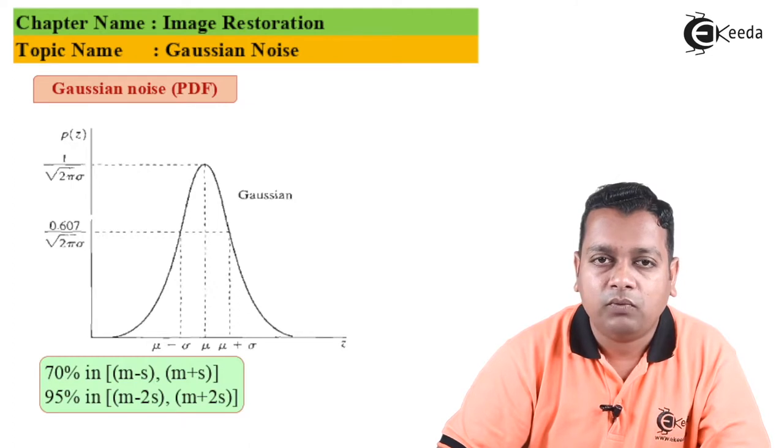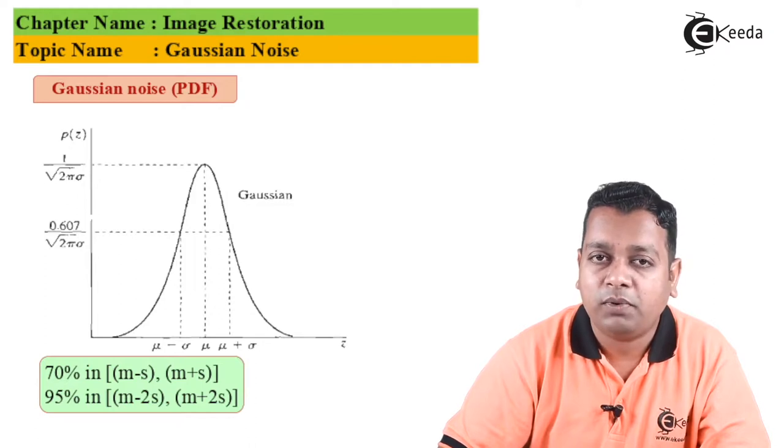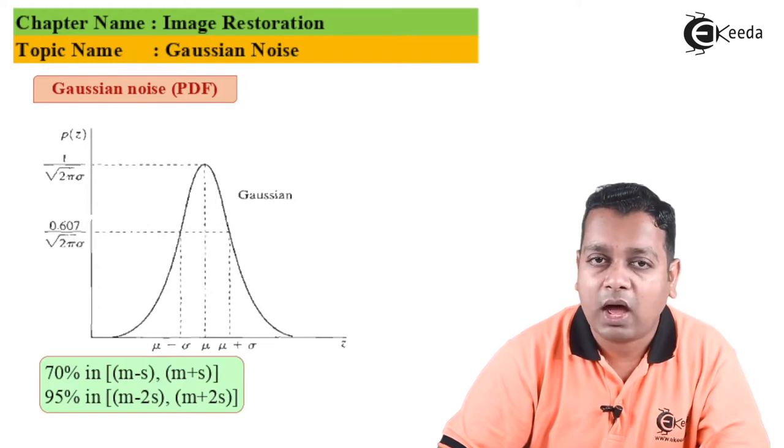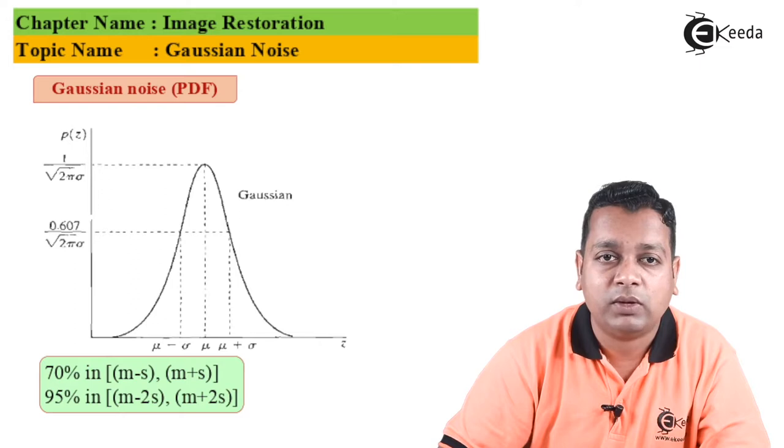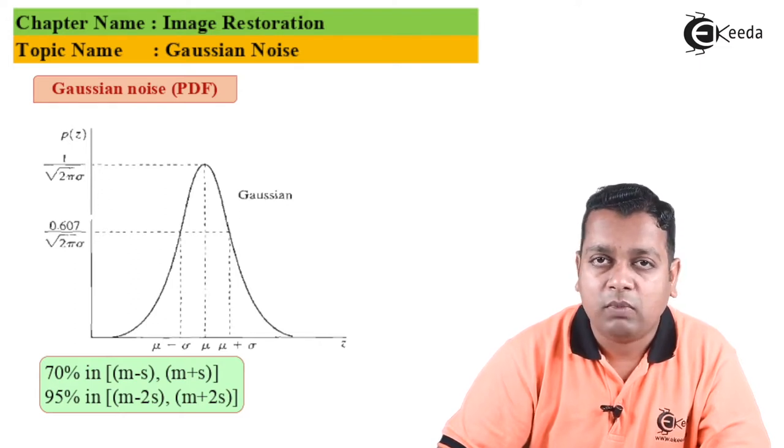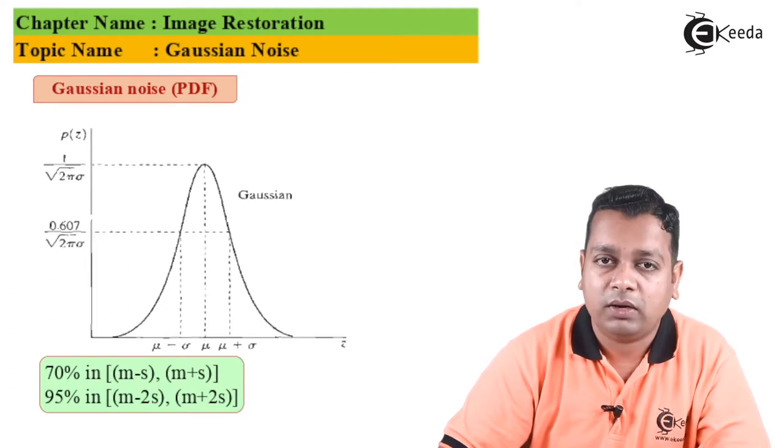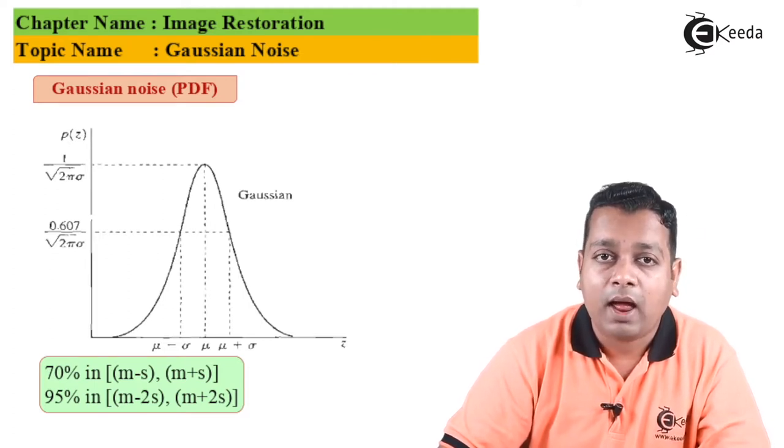As this PDF increases and decreases, we have markings where we have μ - σ, the center peak at μ (the mean value), and μ + σ. At μ - σ, the amplitude is 0.607 divided by square root of 2πσ. At the peak having μ, we have 1 divided by square root of 2πσ.